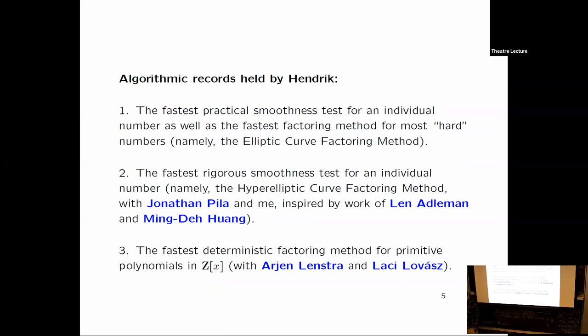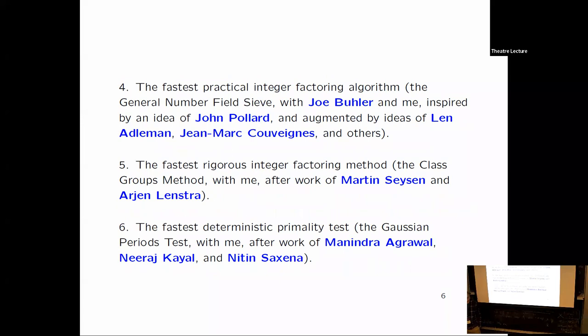Basically what it uses is Jacobian varieties of hyperelliptic curves of genus 2 instead of elliptic curves. We all know about the polynomial time factoring method for primitive polynomials over the integers, due to Hendrik with his brother Arjen and with Blatzy Lovasz. In that paper they also have the famous LLL algorithm. The fastest practical integer factoring algorithm for general numbers is the general number field sieve with Hendrik and me and Joe Buhler, inspired by work of John Pollard, Adelman, and Cuveignes and others.